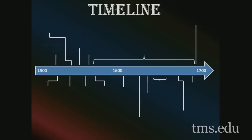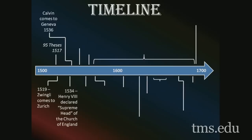I have a timeline here to provide a framework for our discussion. It starts with the Reformation and the 95 Theses of Martin Luther, then 1519 with Zwingli coming to Zurich, Calvin coming to Geneva in 1536, and two years before that the Act of Supremacy of 1534, where Henry VIII is declared the supreme head of the Church of England. In just these four points we have the birth of Lutheranism, the Reformed movement, the systemization of Reformed theology under Calvin, and the birth of Anglicanism — the major denominations of the Protestant movement out of the Reformation.